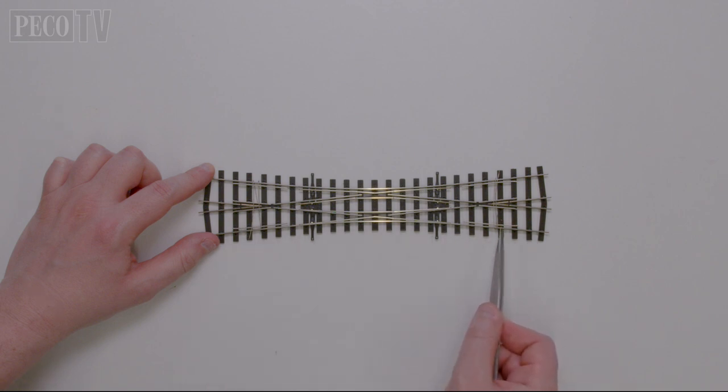Sleeper spacings and proportions that are more in line with 4 millimeters to the foot scale but still HO gauge of 16.5, so perfect for current 00 and HO scale models.